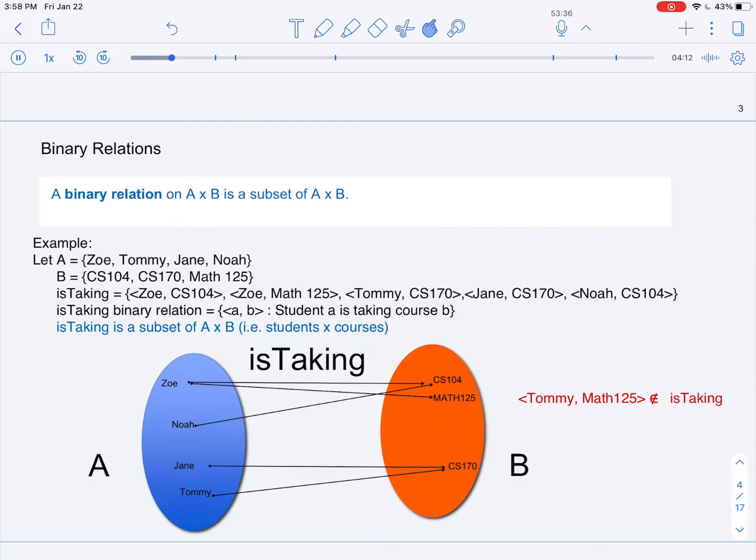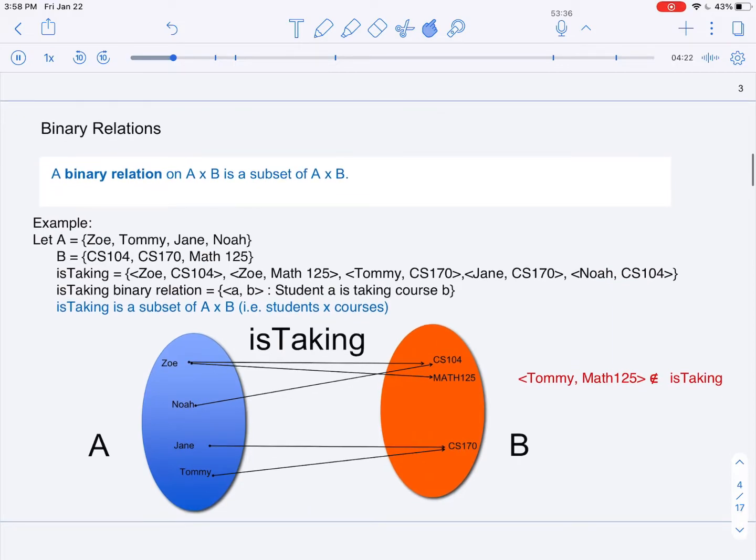In this example, we're thinking about a binary relation for students taking classes. Our first set, set A, will be our set of students. We have four students: Zoe, Tommy, Jane, and Noah.